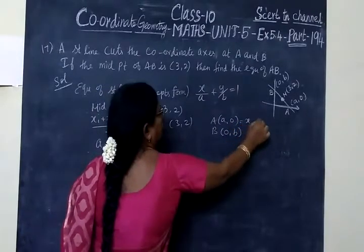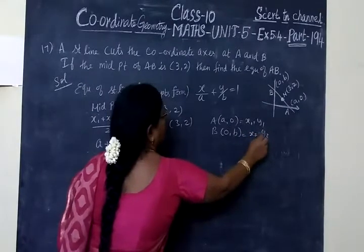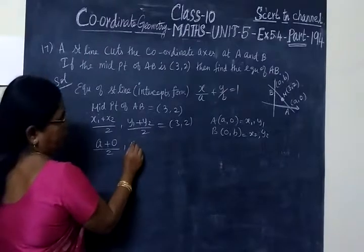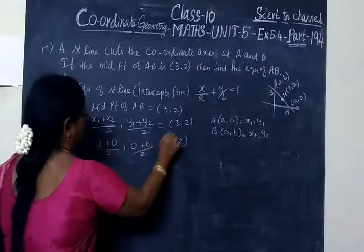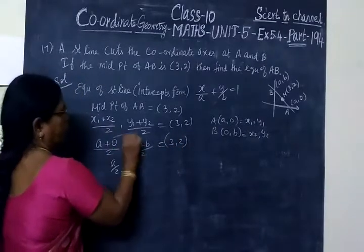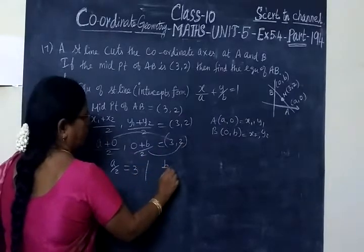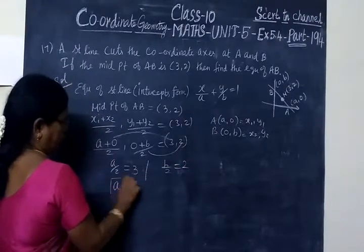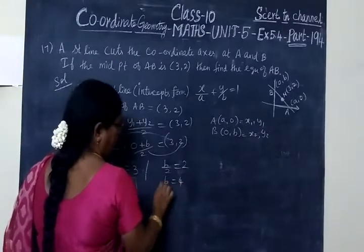This is X1, Y1 and this is X2, Y2. So (A plus 0)/2, (0 plus B)/2 equal to (3, 2). So A/2 equal to 3, B/2 equal to 2. A equal to 6 and B equal to 4.